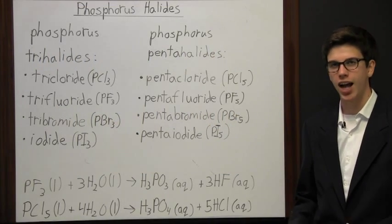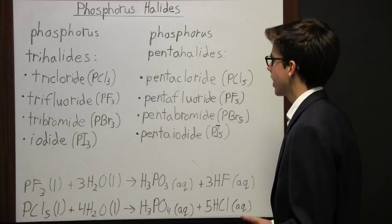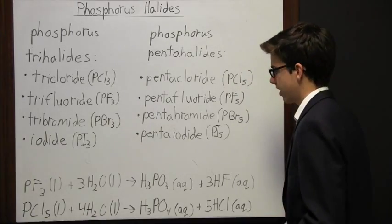Phosphorus halides are made by reacting elemental phosphorus with halogens. We're going to look at two groups of phosphorus halides: phosphorus trihalides and phosphorus pentahalides.